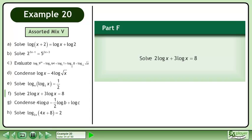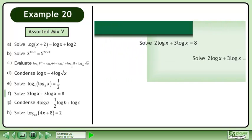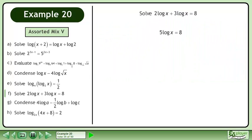In Part F, solve 2 log x + 3 log x = 8. This gives us 5 log x = 8. Divide both sides by 5 to isolate log x. Convert to exponential form using the 7 rule. The answer is 10^(8/5).